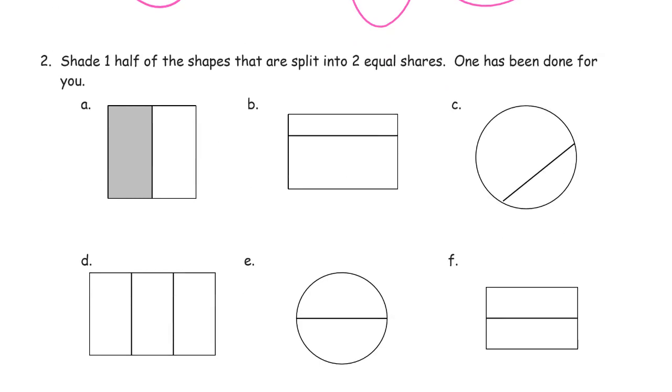Shade one half of the shapes that are split into two equal shares. One has been done for you. This one is not equal. These parts are not equal. This doesn't have two equal shares, it's got three equal shares.